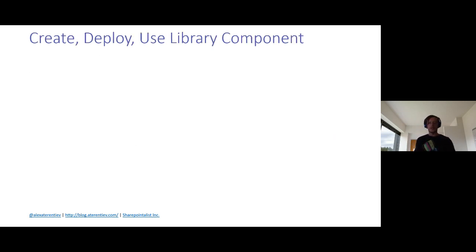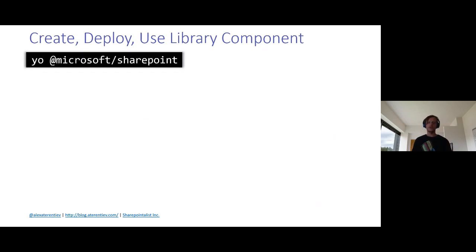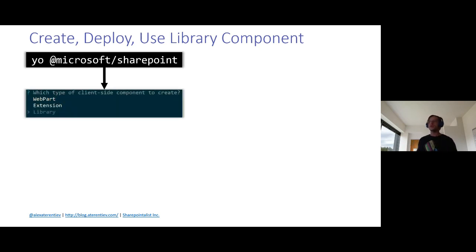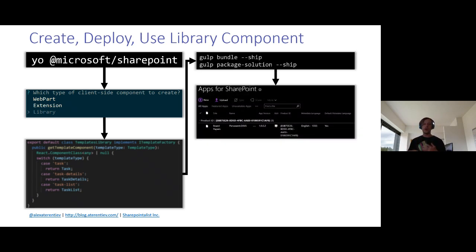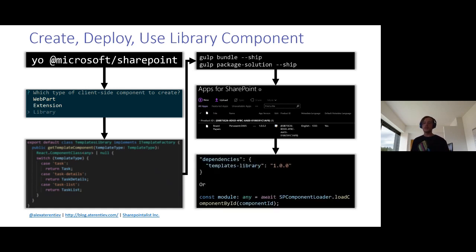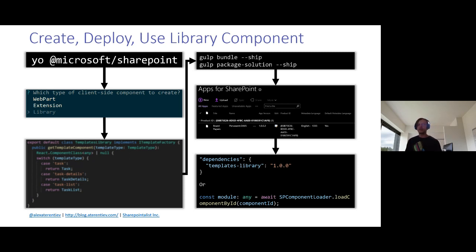To create, deploy, and use a library component: scaffold your project using the Yeoman generator and select 'library' when asked what type of client-side component to create. Implement your custom logic, package the solution, and upload it to the tenant app catalog. You can then reference the library component either in package.json or dynamically in code using SP Component Loader. In the demo I'll show how to work with SP Component Loader, but you can also add the library in the dependencies section of package.json.